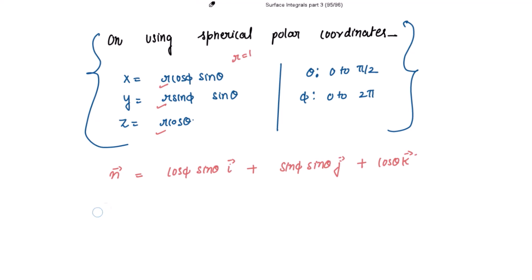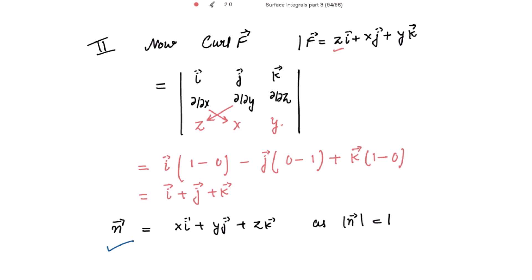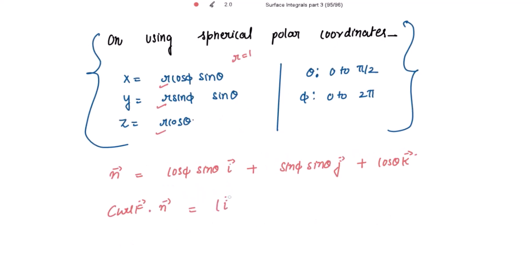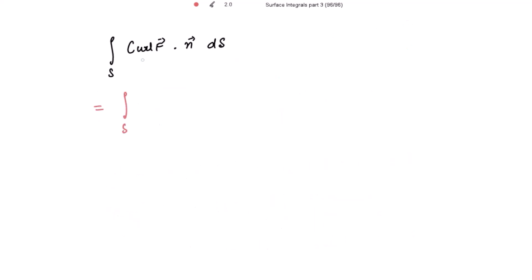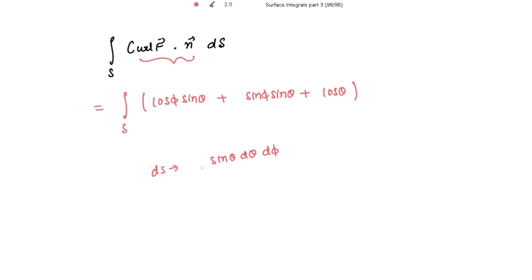Taking the dot product of curl of F vector with n vector: curl F is i + j + k, so the dot product gives cos φ sin θ plus sin φ sin θ plus cos θ. Now taking the surface integral: writing the value for this dot product, and ds is changed to sin θ dθ dφ since the radius is 1. Multiplying sin θ inside, we have a double integration with limits for φ from 0 to 2π and for θ from 0 to π/2.